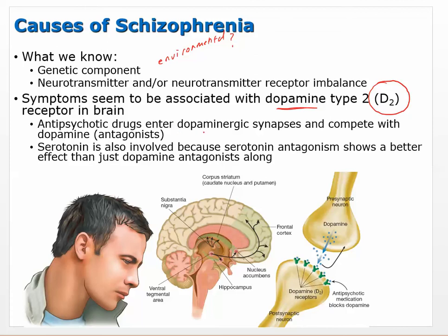Antipsychotic drugs enter dopaminergic synapses and compete with dopamine — they always have at least some level of dopamine antagonism. We've also figured out that serotonin is involved because the newer atypicals, developed in the 70s and 80s, also antagonize serotonin receptors, particularly the serotonin 2A receptor. There are about 15 different serotonin receptors in the brain, and serotonin antagonism is believed to help with the negative symptoms.